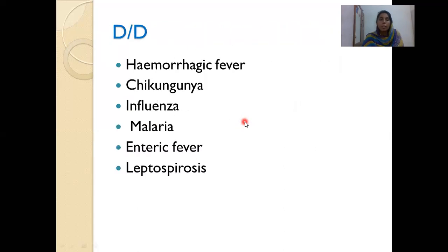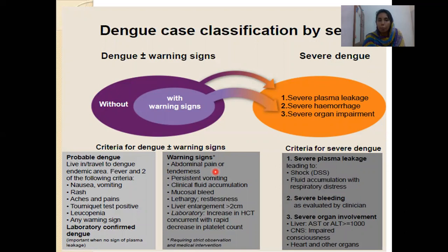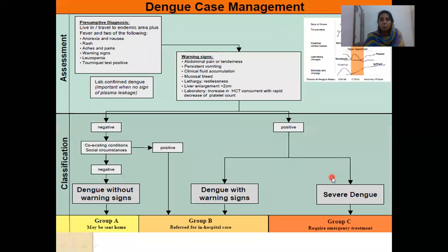Differential diagnosis includes other hemorrhagic fevers, chikungunya, influenza, malaria, enteric fever, etc. — because in this season the child may present with dengue-like symptoms but it may be any one of these, so proper diagnosis is necessary. In summary: dengue is classified by severity — Group A (without warning signs, send home with advice), Group B (with warning signs or comorbidities, admit with fluids at 6 mL/kg/hr), and severe dengue requiring ICU care.